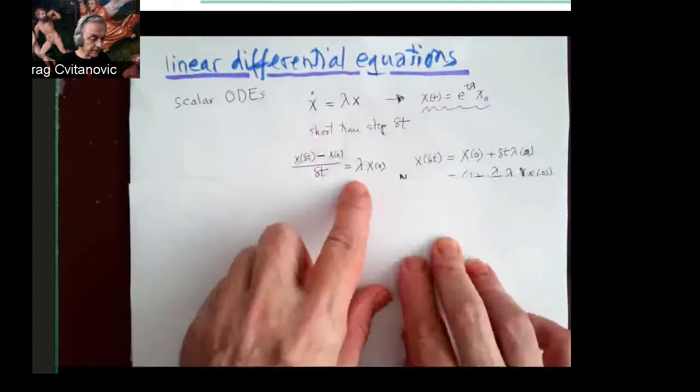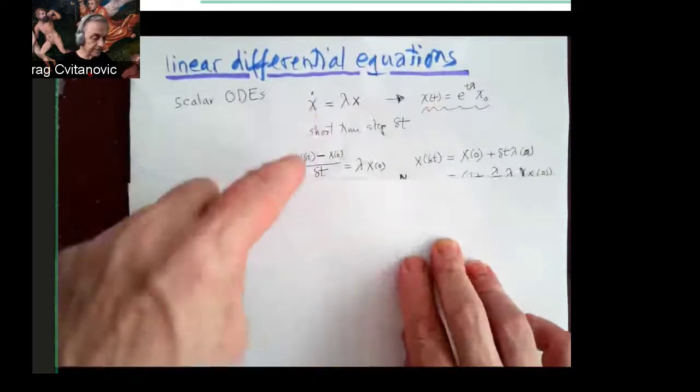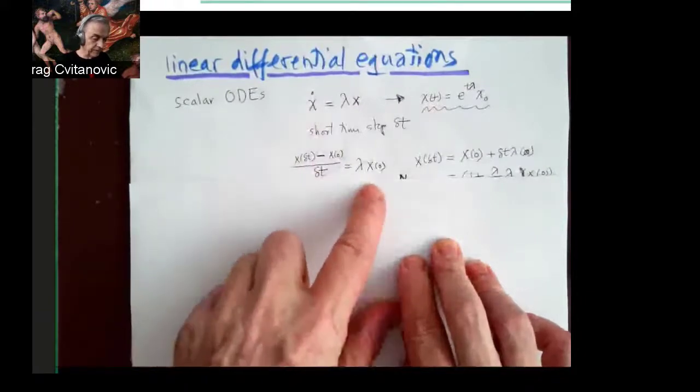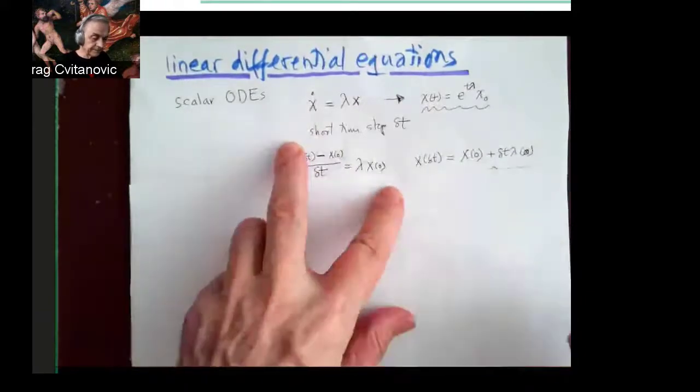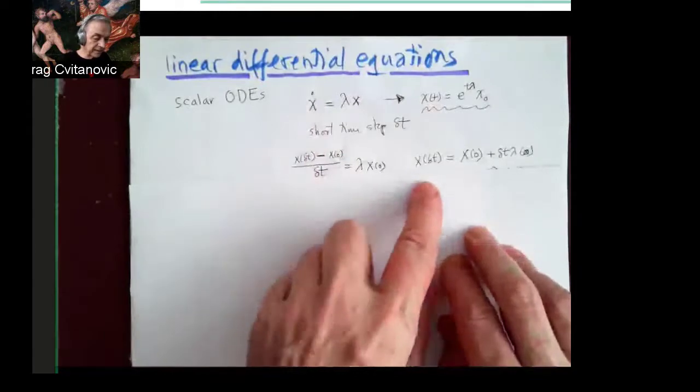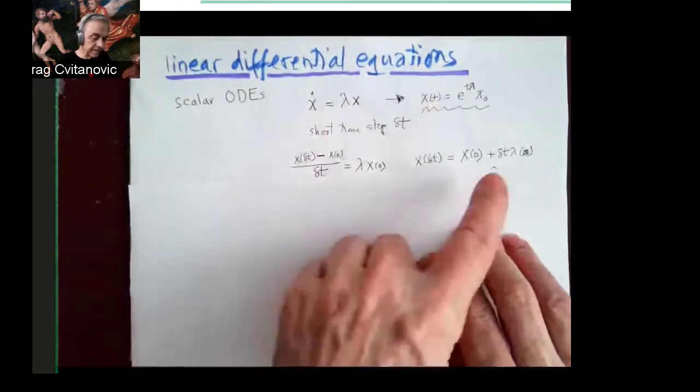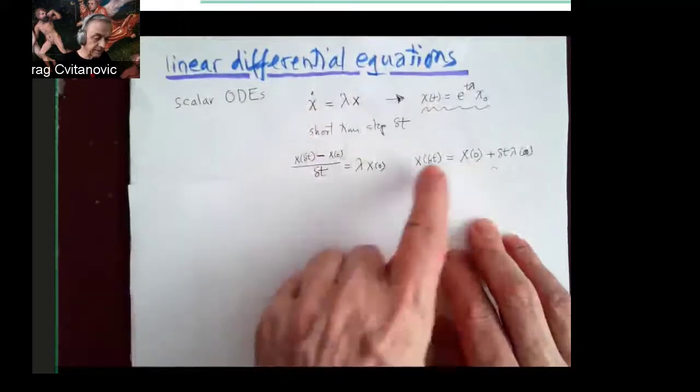And that's a discretized version or finite difference version of a linear differential equation. X(T+δT) is, I just multiply this and add a constant, so I'm just rewriting this equation.